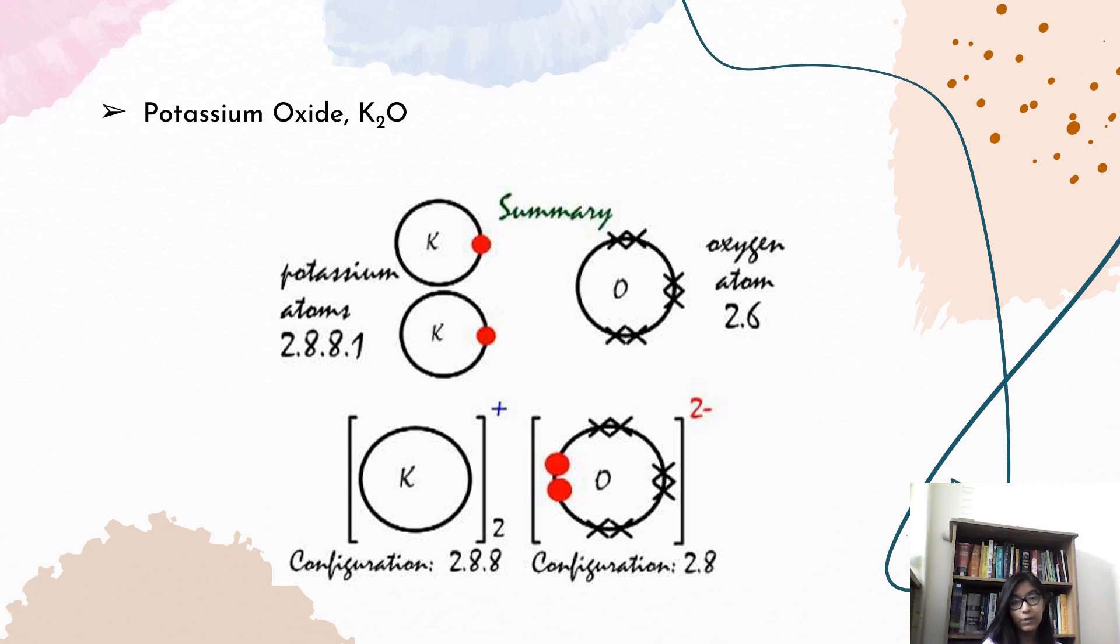Let us see another example. We have potassium oxide, K2O. Two atoms of potassium and one atom of oxygen. Potassium has a valency of 1, whereas oxygen has a valency of 6. Each of the potassium atoms transfers its electron to oxygen, which then gains 2 electrons. As a result, both the potassium atoms and also the oxygen atoms end up having 8 electrons in their outer shell. Since potassium was the one to give away the electrons, it ends up having a positive charge. And since oxygen gained those two electrons, it ended up having a negative charge.